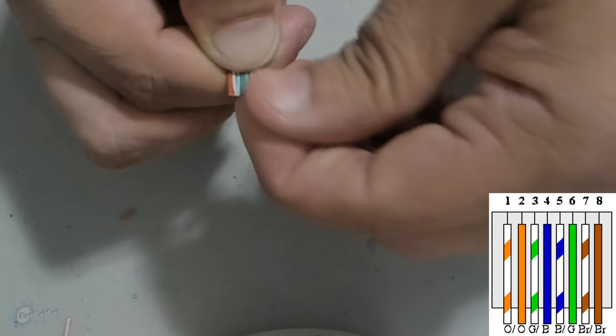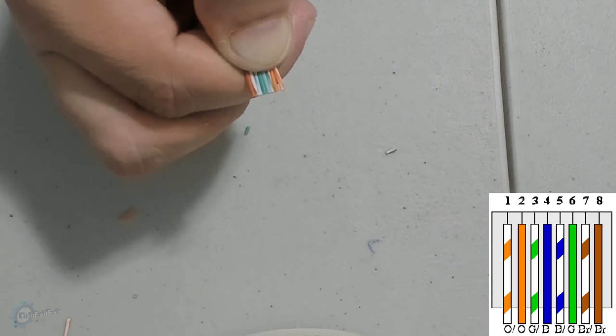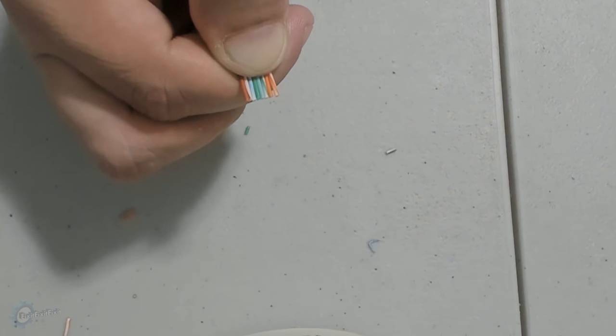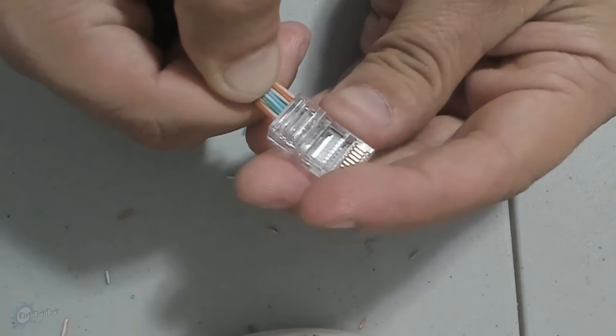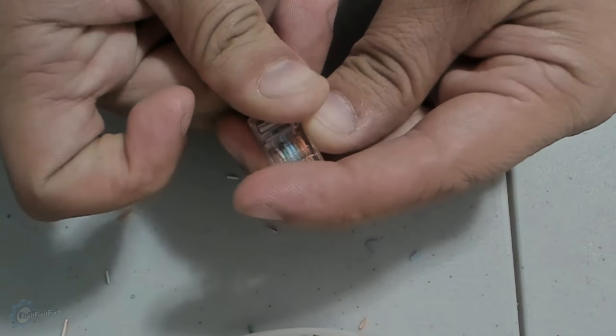Once all the wires are ordered and trimmed, you must now insert the wire into the RJ45 connector. With the orange side of the wire on your left and the network jack terminals facing up towards you, slowly insert the wires into the jack.